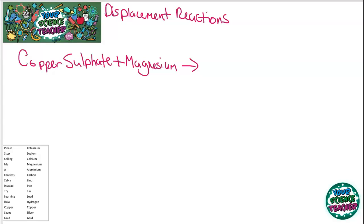It says, please stop calling me a careless zebra. Instead, try learning how copper saves gold. Now, you can come up with your own little mnemonic to remember it. However, I quite like that one. Now, I said that you could use a more sophisticated method of determining the reactivity of the metal. And that's by using a displacement reaction. And these are a lot better. You can see conclusive results more easily using this.